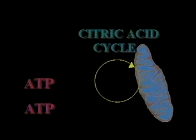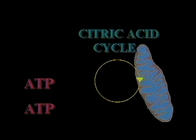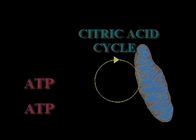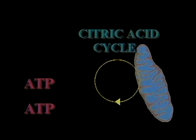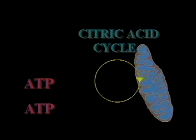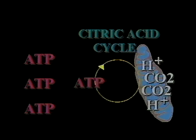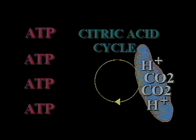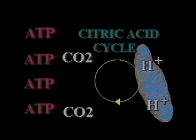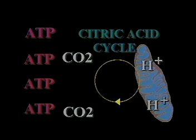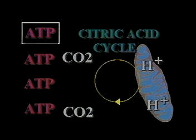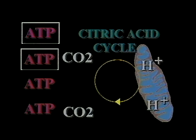In the mitochondria, pyruvic acid enters a series of reactions called the citric acid cycle. In eight steps assisted by enzymes, pyruvic acid is broken down to form hydrogen atoms and carbon dioxide. More energy is released, which again is harvested to form two more molecules of ATP.